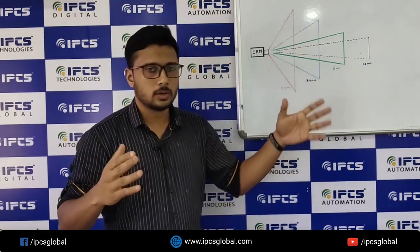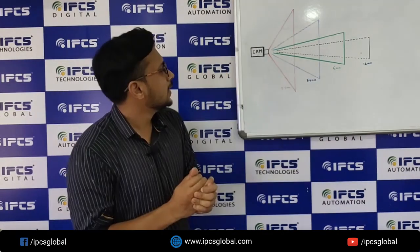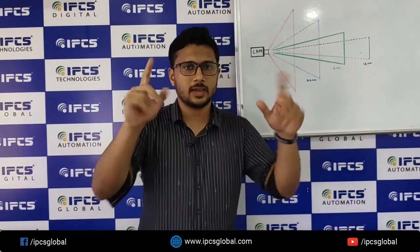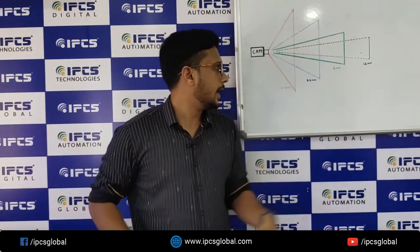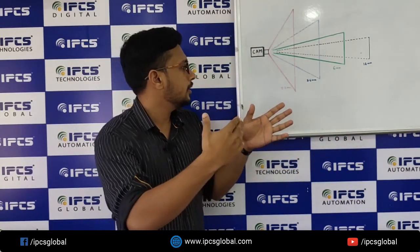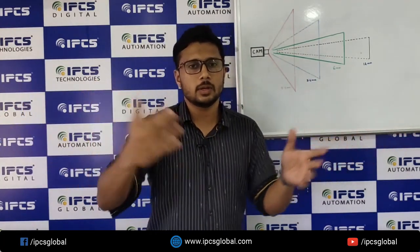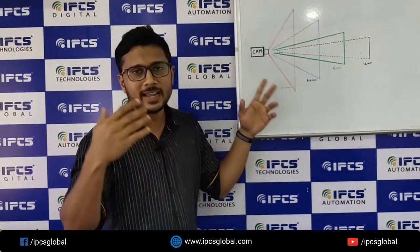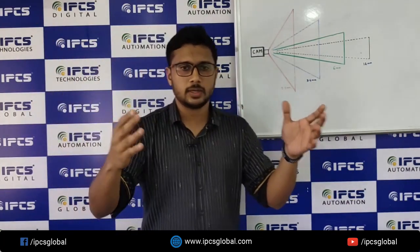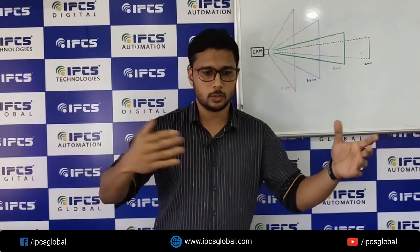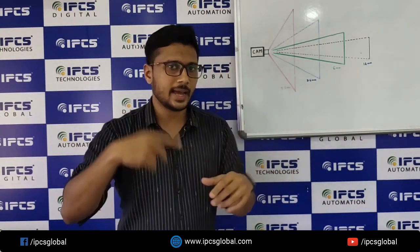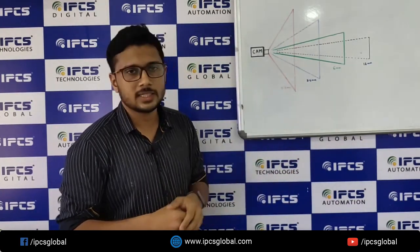That wide angle depends upon the focal length. A 2.8mm lens will have approximately around 90 degrees of wide angle. So 2.8mm CCTV cameras are used to cover wide angles. For example, in a small cabin where the area is large but you don't need much magnification of objects, we can use a 2.8mm CCTV camera.